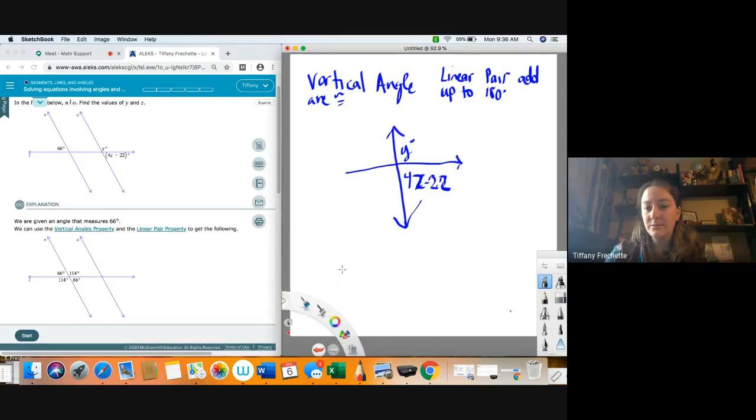Now would this necessarily be easy if I said y plus 4z minus 22 equals 180? I can't solve that because I have a y and a z in the same equation. I need to know what one of them is before I can solve. So that's another issue we need to deal with before we can actually solve this equation.